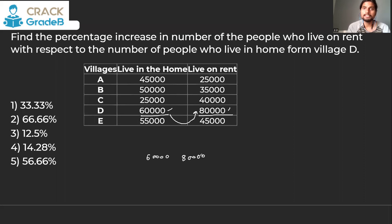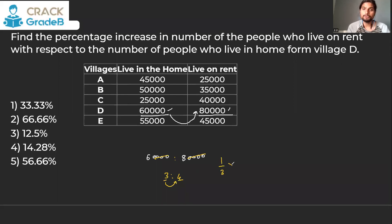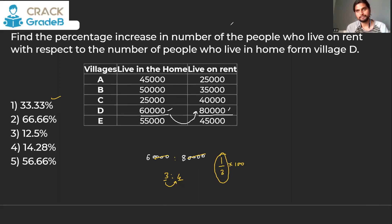You can take the ratio: 60,000 and 80,000 simplify to 3 is to 4. You are asked: 4 is what percent more than 3? It is 1 more compared to 3, and the fraction value of 1/3 is 33.33%. So the answer is 33.33%.